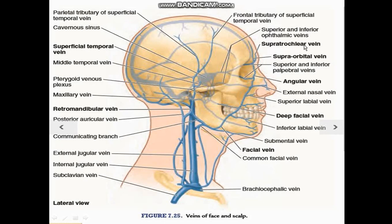The supratrochlear vein and supraorbital vein join to form the angular vein at the medial angle of the eye. This angular vein descends downwards as the facial vein. Through its course, the external nasal vein, the superior labial vein, and inferior labial vein drain into it.